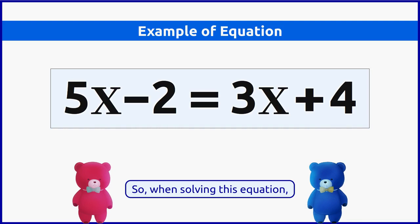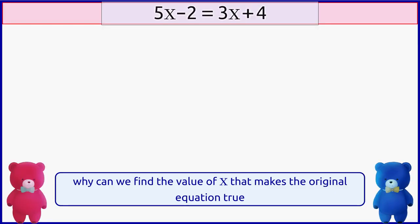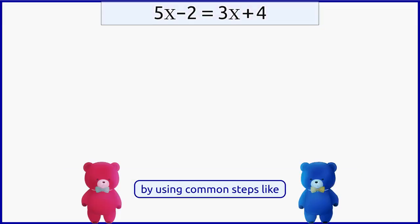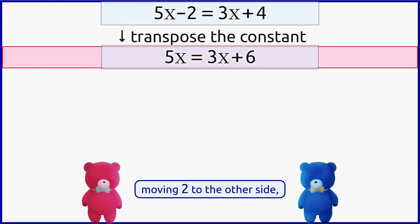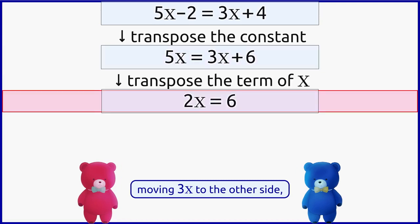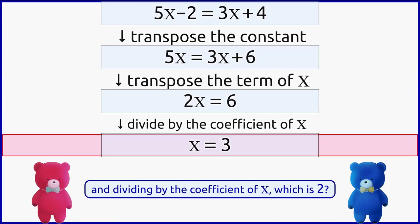So, when solving this equation, why can we find the value of X that makes the original equation true by using common steps like moving 2 to the other side, moving 3X to the other side, and dividing by the coefficient of X, which is 2?